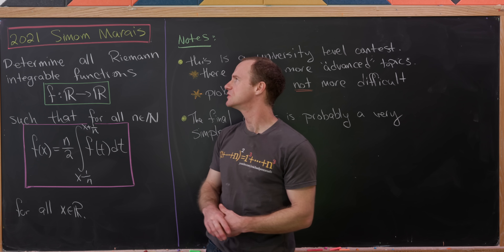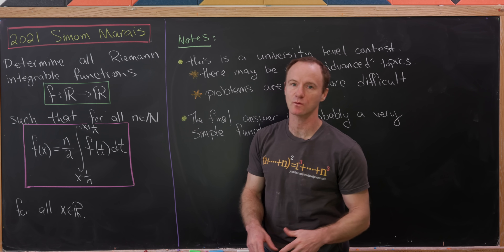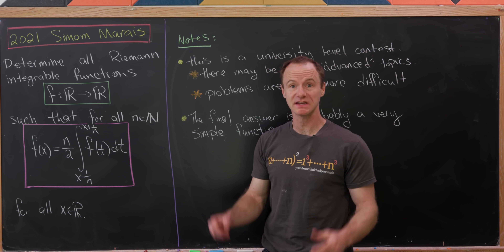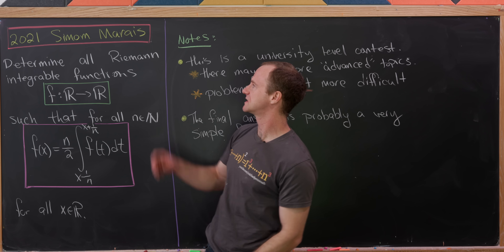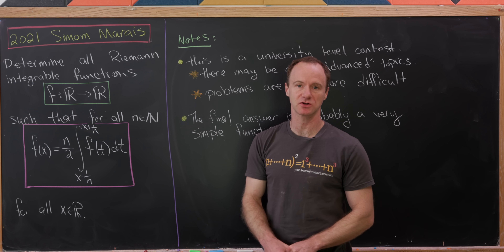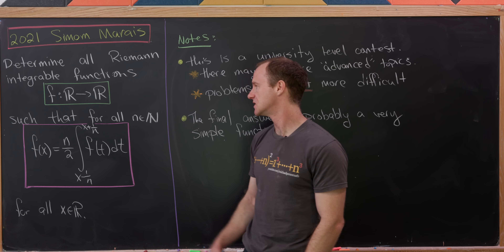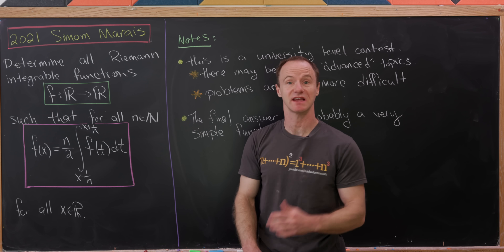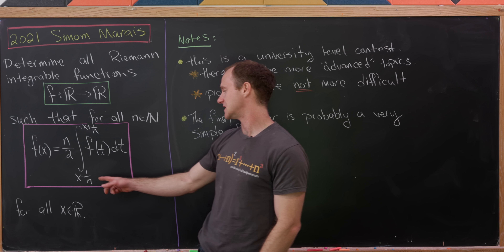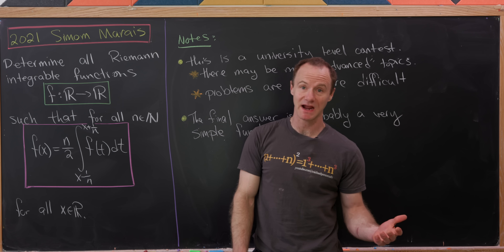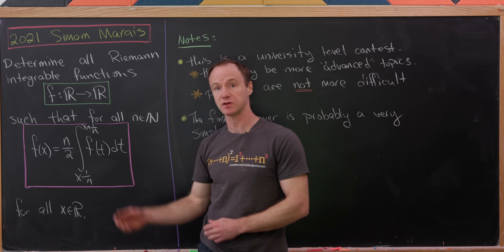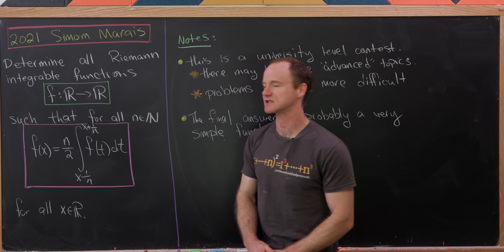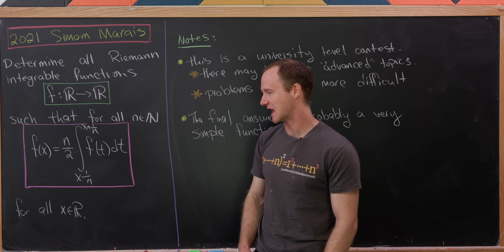Today we have a nice problem from the 2021 Simon Moraes math contest. Our goal is to determine all Riemann integrable functions on the real numbers such that for all natural numbers n, f of x equals n over 2 times the integral from x minus 1 over n to x plus 1 over n of f of t dt, and this equation has to hold for all real numbers x.